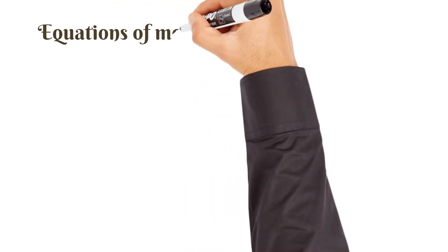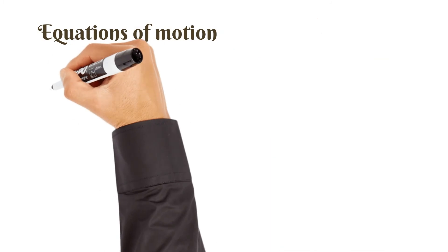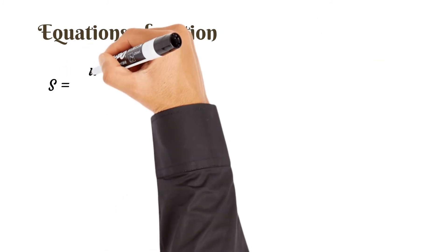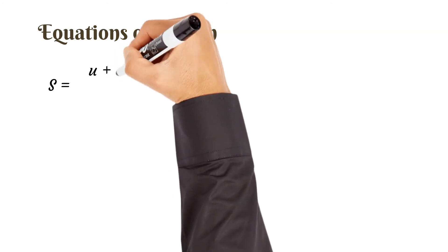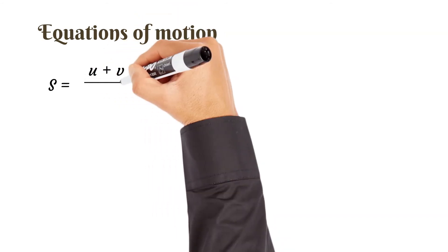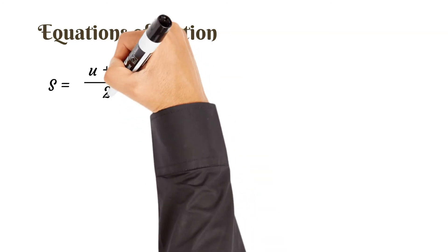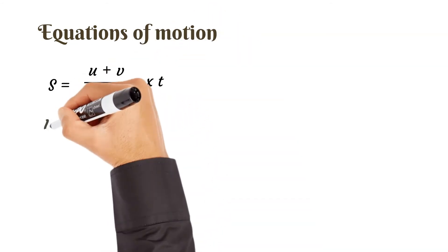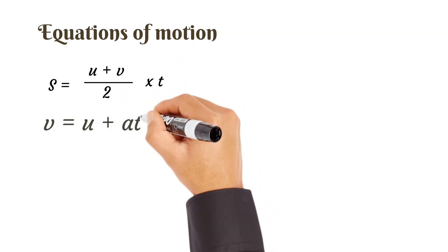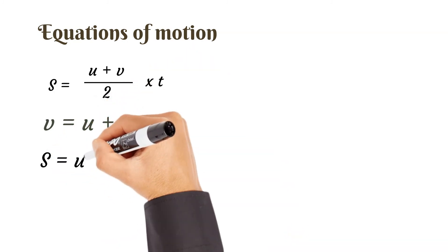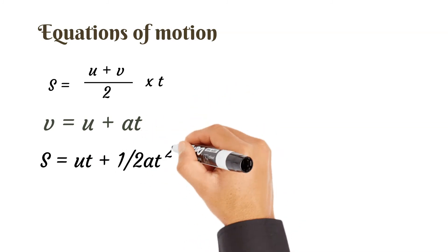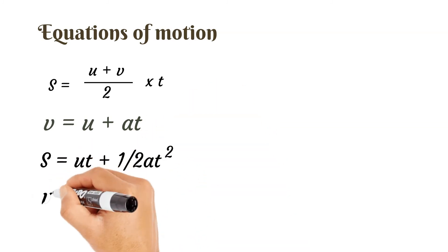Equations of motion - these are the equations we need to solve motion problems. The first one is s equals u plus v over 2 times t. You need to memorize these equations. Second one, v equals u plus at. Third one, s equals ut plus half at squared.